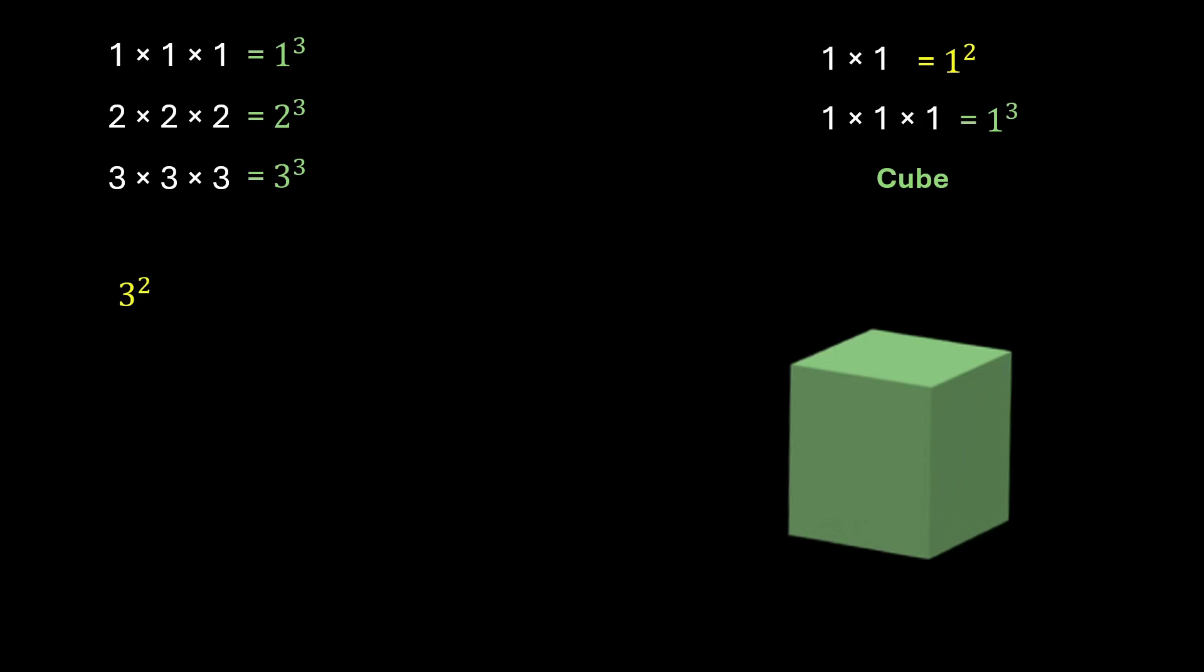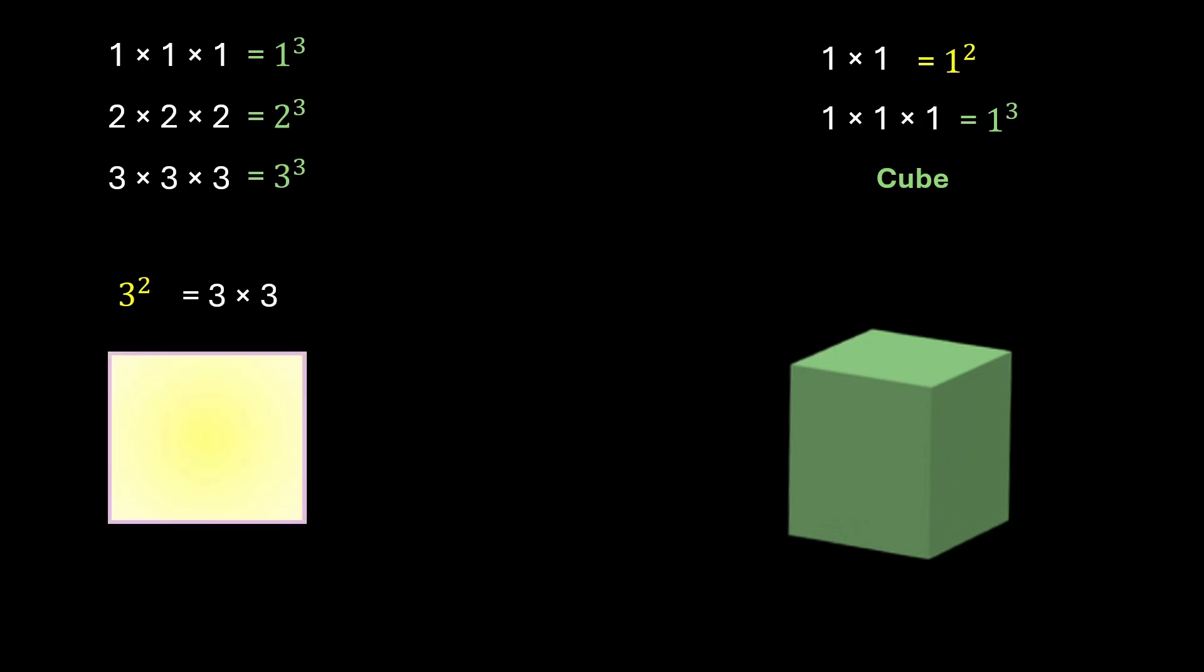Think about this: square of a number is the number multiplied by itself and this term square is no coincidence. Square of a number is equal to the area of the square whose side is equal to that number. Now we know that area of square is side into side, right, and that's what we're doing here. Square of 3 is side into side, that is 3 into 3.